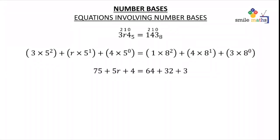This gives us 75, because 5 squared is 25, so times 3 gives us 75, plus 5r plus 4 equals 64 plus 32 plus 3. We are now having 5r plus 79 equals 99. Simplifying this: 5r equals 99 minus 79. 5r equals 20, so our r becomes 4.